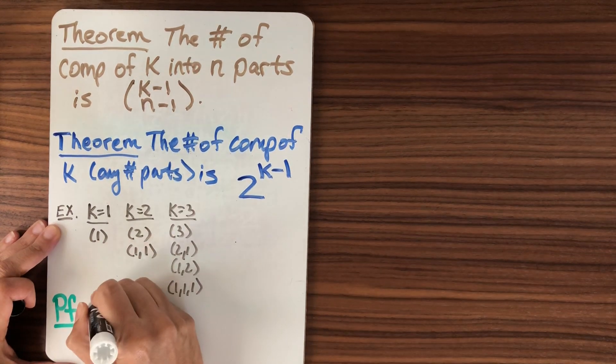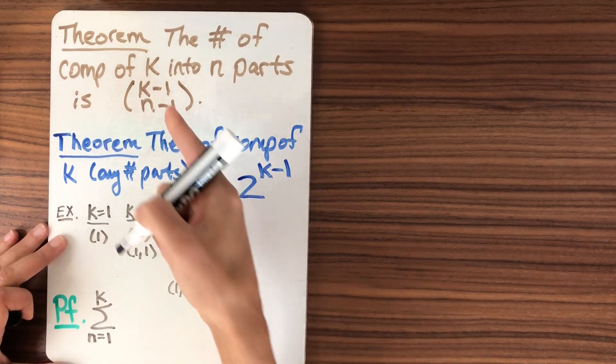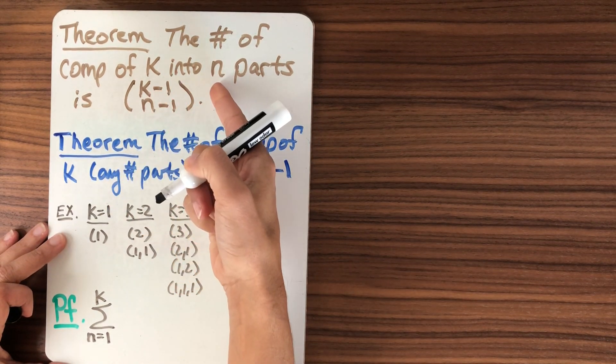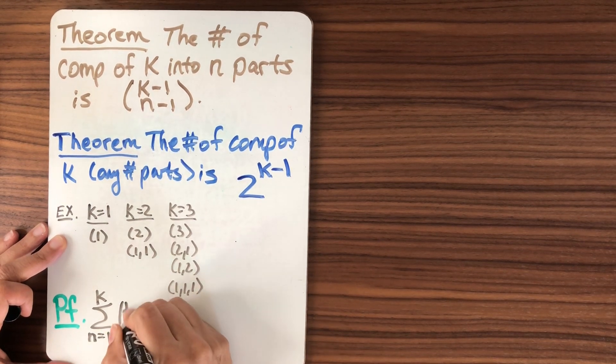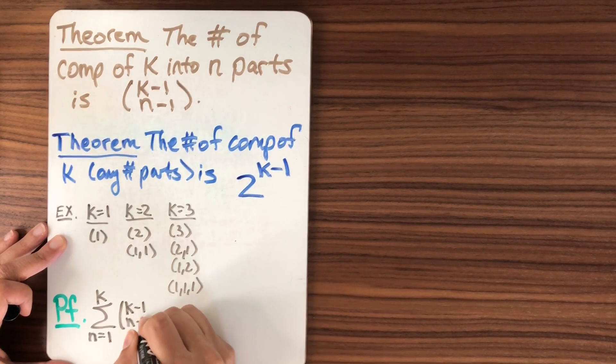And what's the most number of parts you can have? Well, the most number of parts that you can have is k. Why k? Because each part is at least one. So you can't go past that in terms of your number of parts. Okay, so this is what we're trying to count.